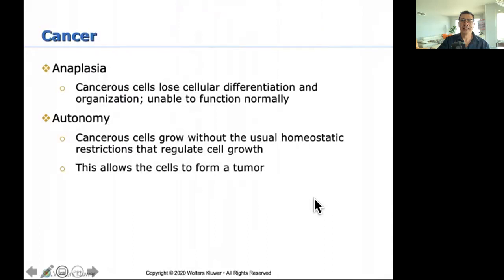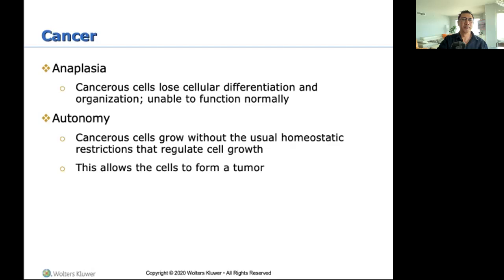Terminology: as abnormal cells continue to divide, they lose more of their original characteristics. Anaplasia: cancerous cells lose cellular differentiation and organization and are unable to function normally. Autonomy: cancerous cells grow without the usual homeostatic restrictions that regulate cell growth — they're like super bad cells — allowing them to form a tumor.